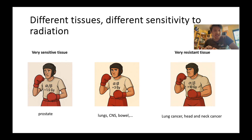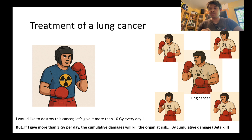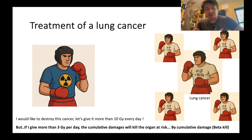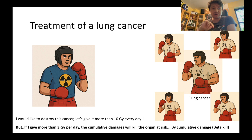Now let's talk about 3 different types of tissues. First, prostate cancer: the prostate has a very low alpha-beta ratio of 1.5 gray. The lung, central nervous system, and bowel — normal tissue in general — has an alpha-beta ratio of 3 gray. Lung cancer and head-and-neck cancer have a high alpha-beta ratio of around 10 gray.